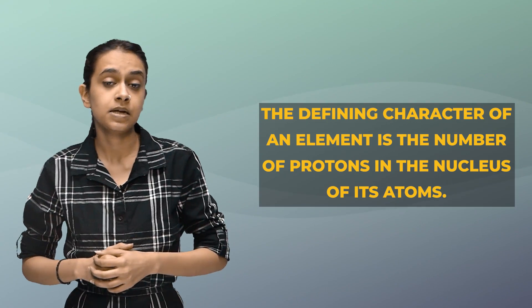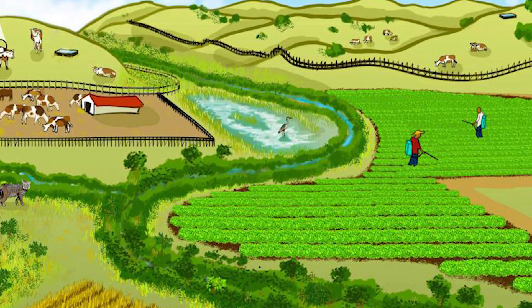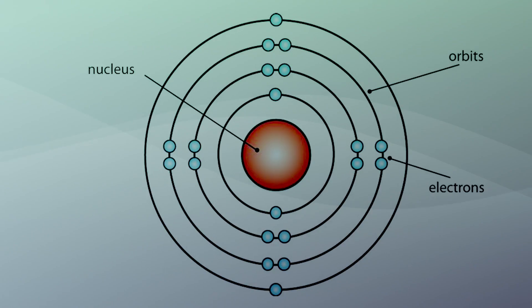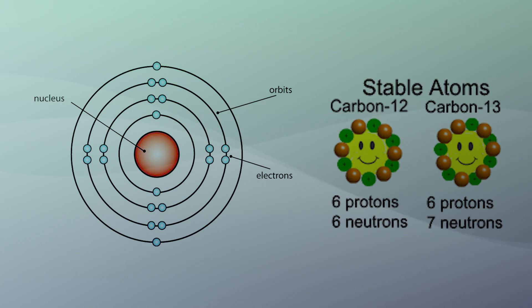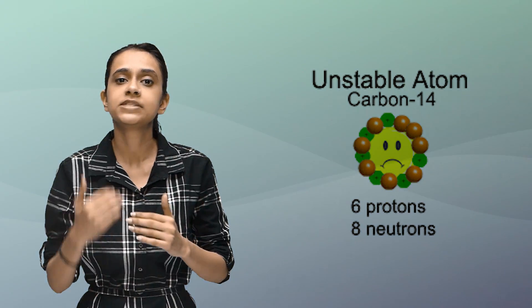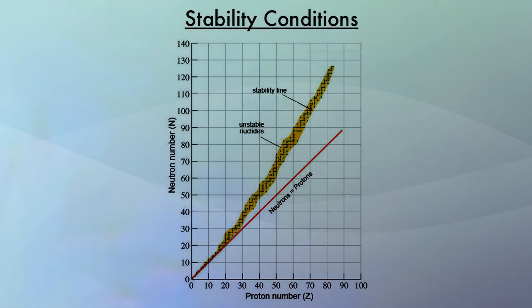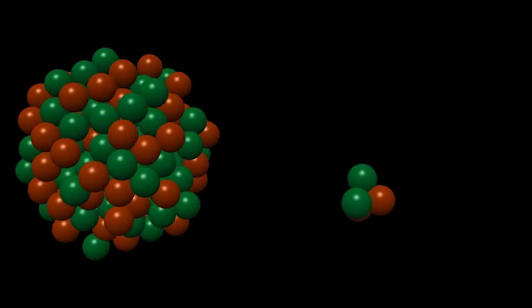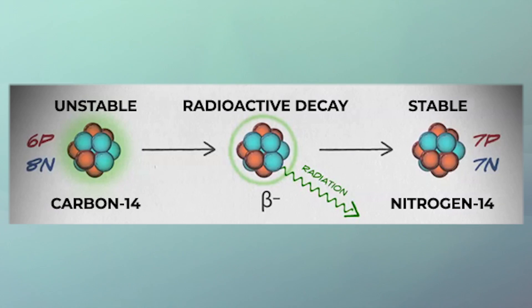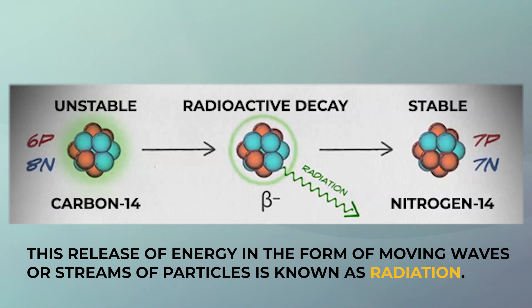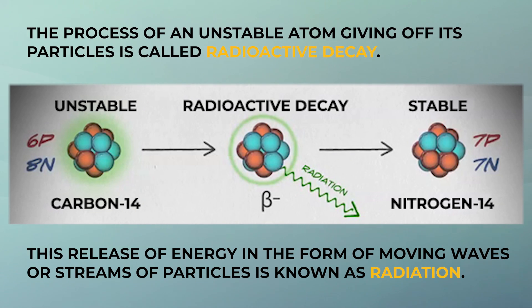The defining character of any element is the number of protons present in the nucleus of its atom. Most atoms are stable, meaning all their particles remain the same and don't change abruptly. But in some special cases, the number of neutrons and protons gets a little high, meaning they can't stay bound in the nucleus. The atom becomes unstable, and the nucleus starts to lose neutrons and protons. This process is accompanied by the release of energy. This release of energy in the form of waves or a stream of particles is what is called radiation, and the process of an unstable nucleus giving off its particles is called radioactive decay.